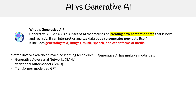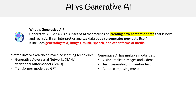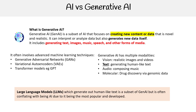You have vision, touch, taste — things like that. So for generative AI, we have modalities for vision, text, and audio. And there are some less common ones like molecular — for example, generative AI can do drug discovery via genomic data. A lot of people associate generative AI with large language models, which generate human-like text. LLMs are a subset of generative AI, but are often conflated with being AI itself due to being the most popular and developed.